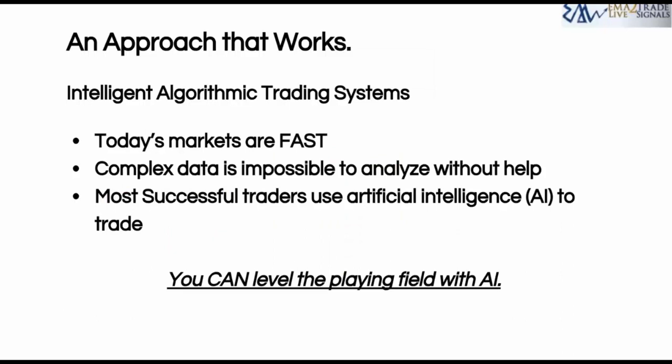An approach that works: intelligent algorithmic trading systems. Today's markets are fast, and complex data is impossible to analyze without help. Most successful traders use artificial intelligence — AI — to trade. You can level the playing field with AI. Humans are smart, but we have limitations. The inability to fully understand and profit from financial markets runs up against those limitations. Therefore, many traders and analysts have turned to mathematics and computers to model the markets and predict future price movements.